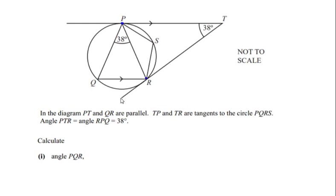The tangents touch the circle only at one point and then move away. Angle PTR is equal to angle RPQ, which is equal to 38 degrees. We need to calculate angle PQR.